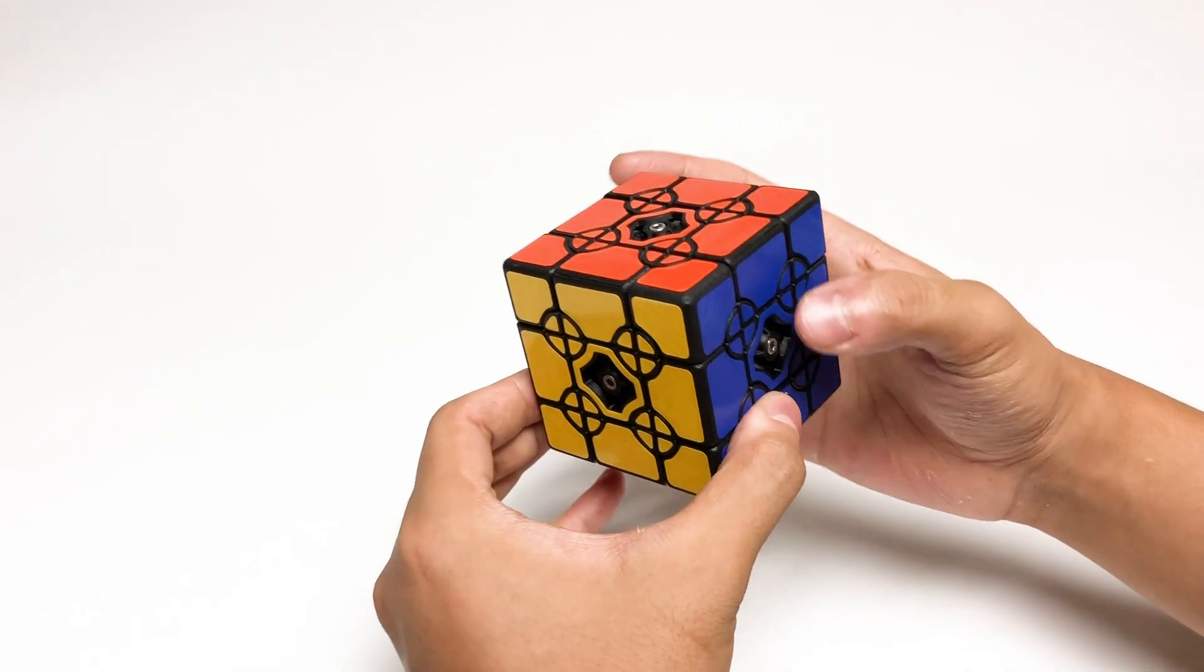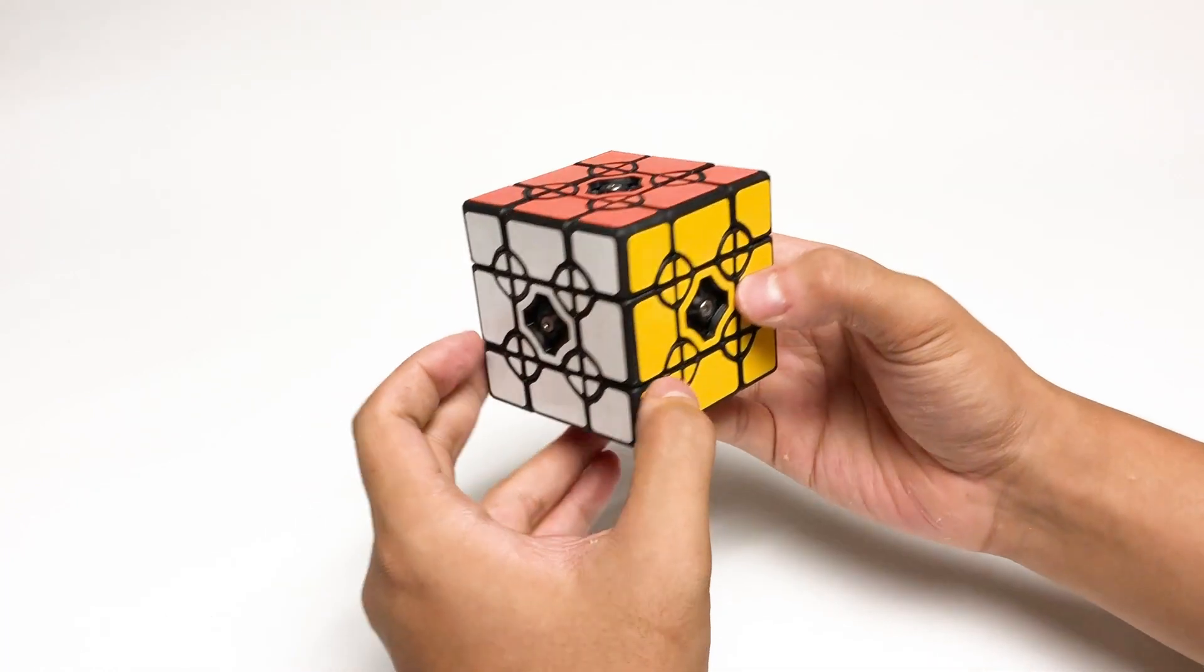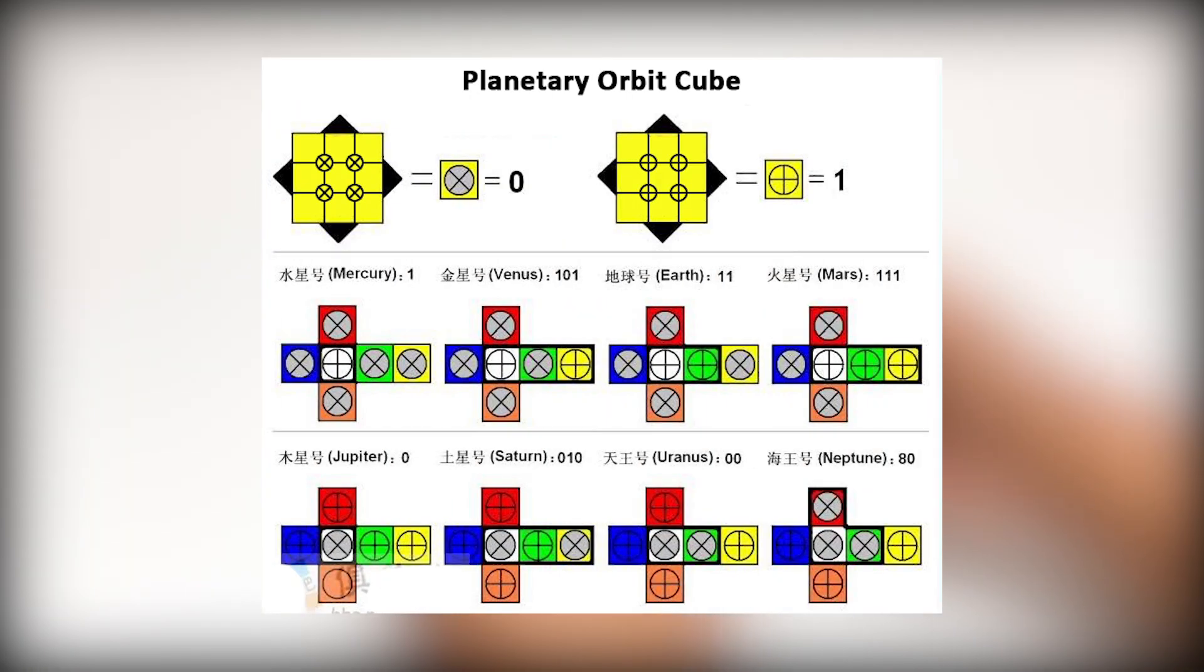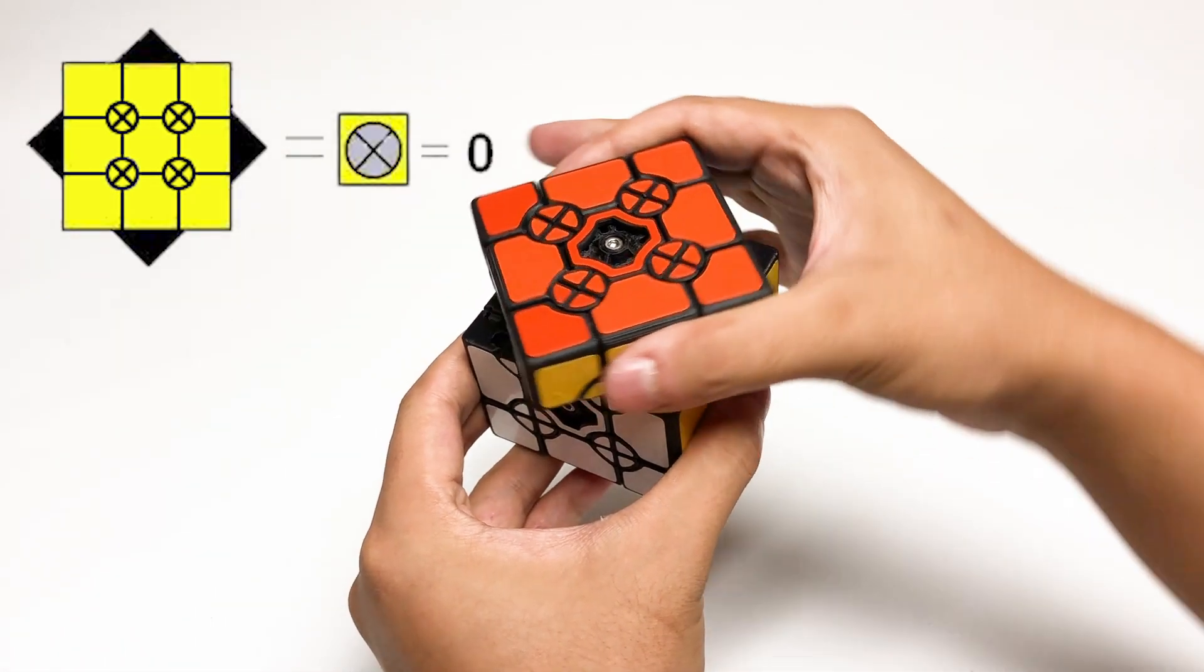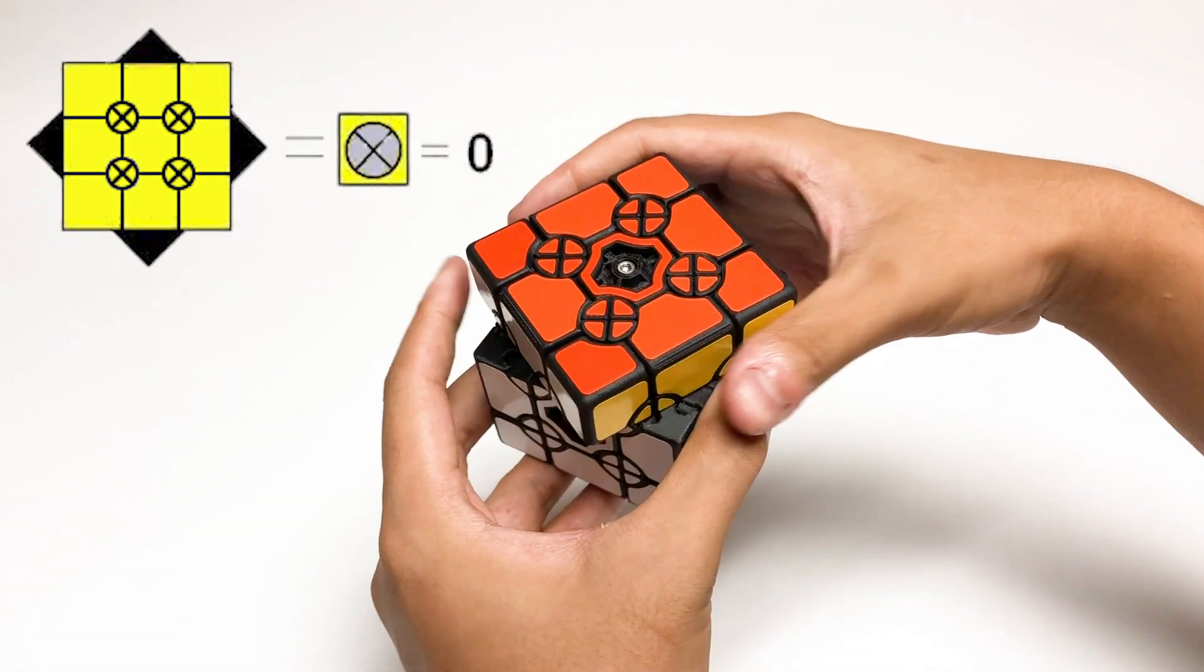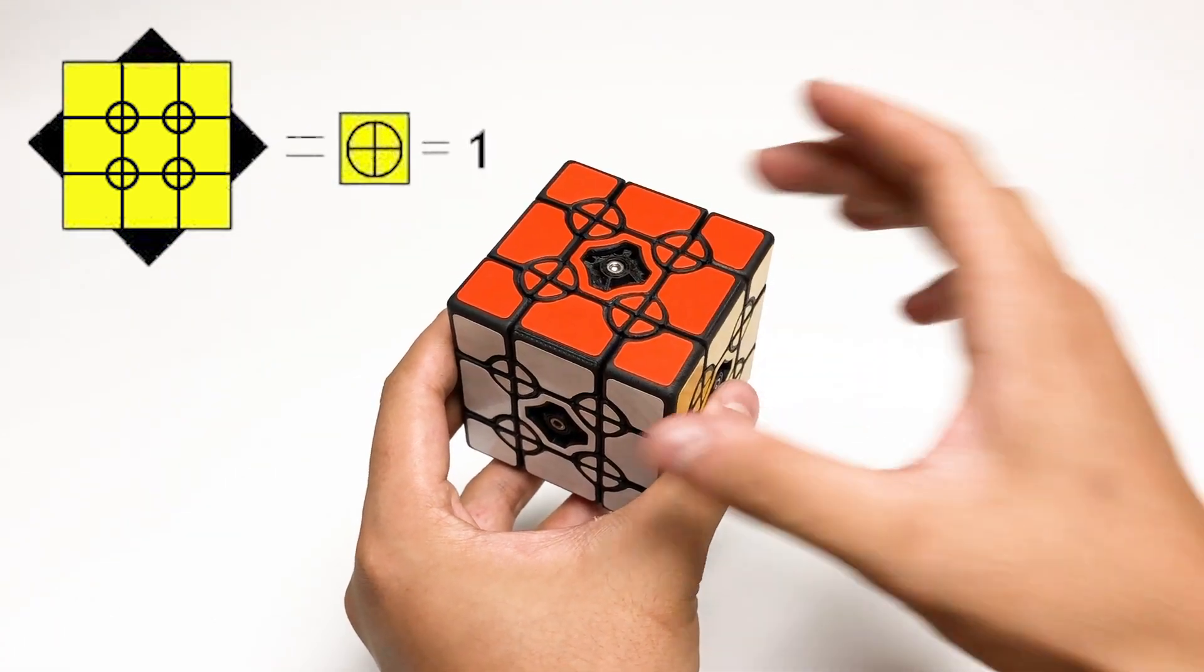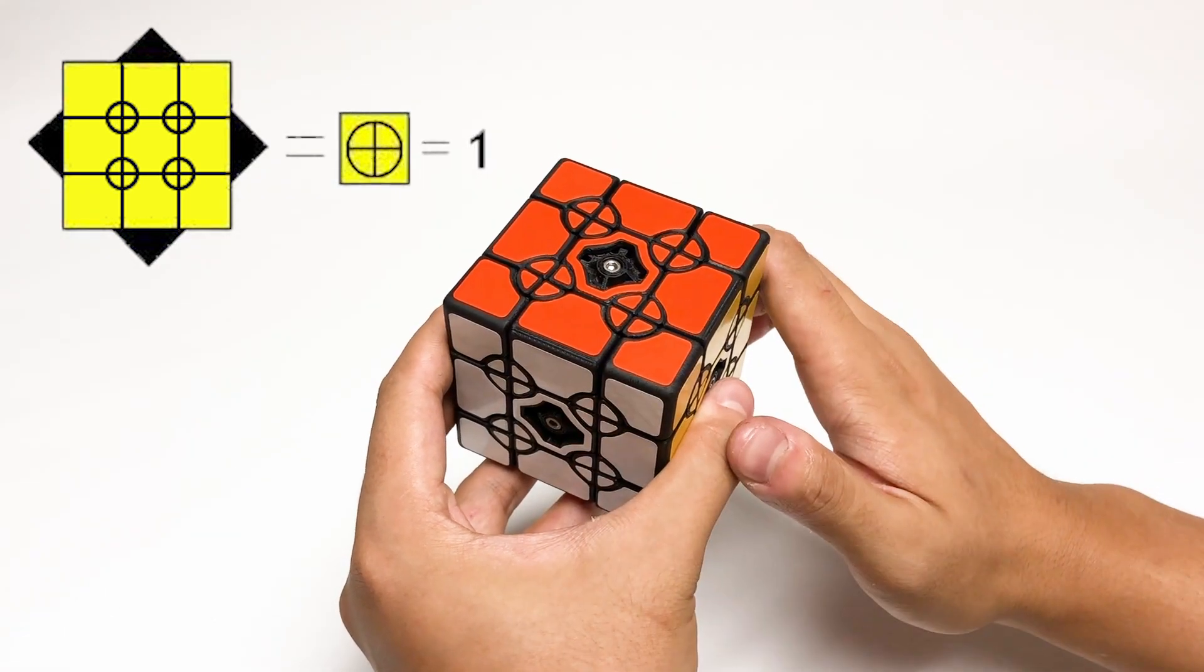This idea also lends itself to a few natural variations, the first being a set of crazy planet puzzles, where some faces rotate like they do on this puzzle, while others would have the circles remain stationary relative to the face when they are being rotated.